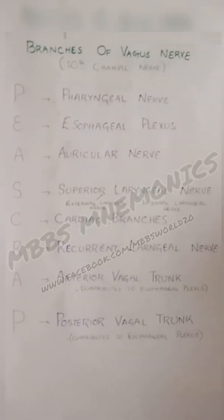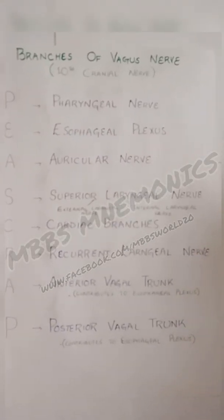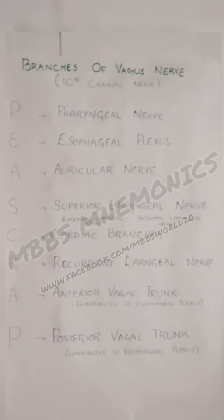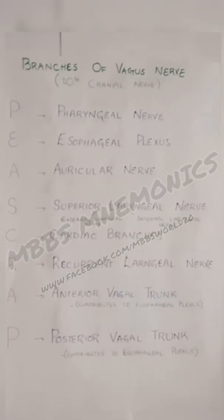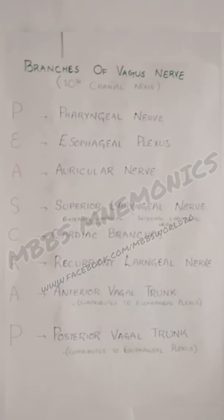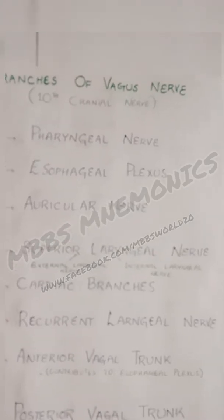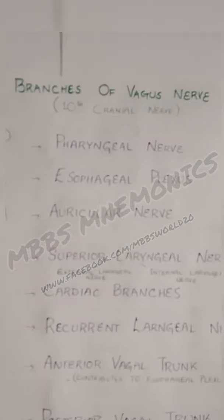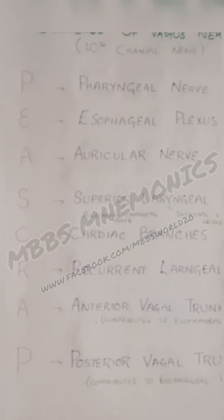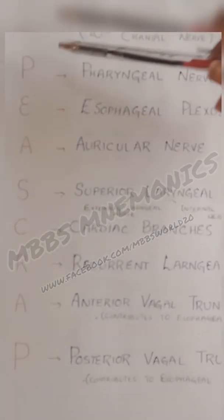Today I will tell you about the branches of the vagus nerve. As you know, the vagus nerve is the 10th cranial nerve and it interfaces with the parasympathetic control of the heart, lungs, and digestive tract. So it's an important nerve. Let us memorize the branches of the vagus nerve by a simple mnemonic — that mnemonic is P SCRAP.